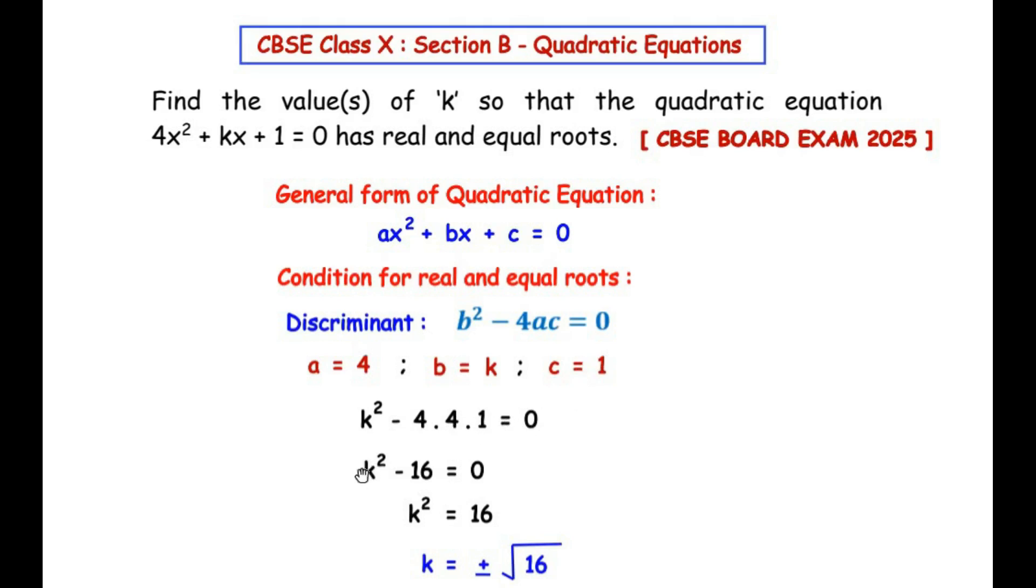Simplifying this, we get k² minus 4 times 4 is 16, and 16 times 1 is 16, equal to 0.